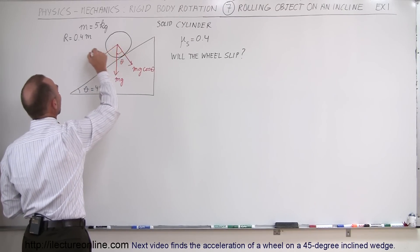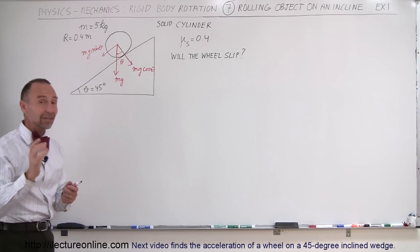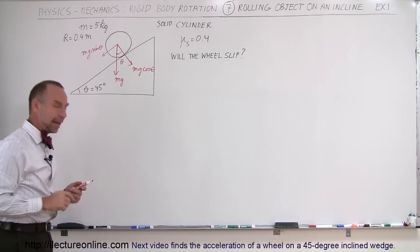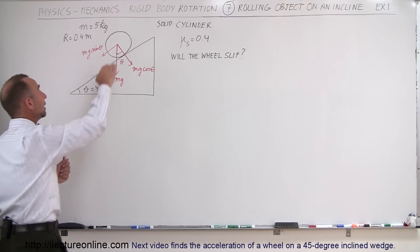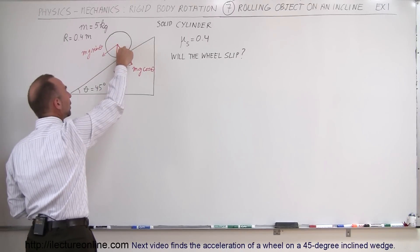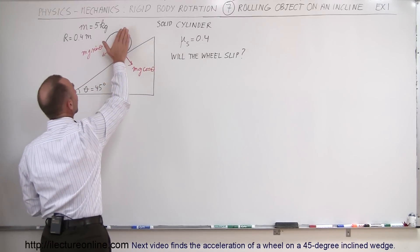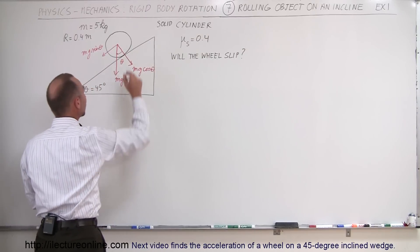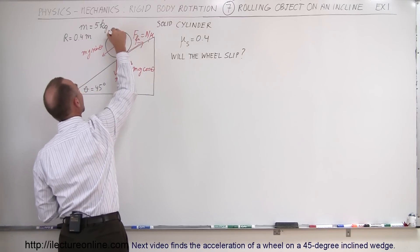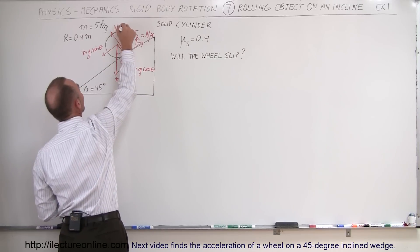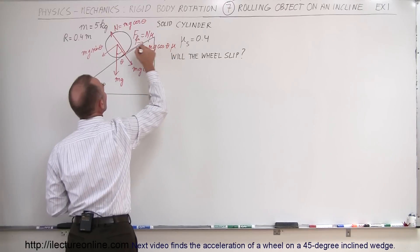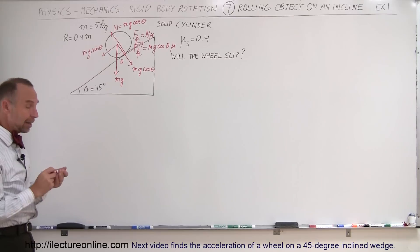The parallel component is mg sine theta — the force pulling the wheel down the incline. The perpendicular component, mg cosine theta, pushes the wheel against the incline, causing a friction force. Without friction the wheel would simply slide and not rotate. With friction — and here the coefficient of friction is 0.4 — the wheel rotates, meaning friction acts up the incline. The friction force equals the normal force times mu, and since the normal force equals mg cosine theta, friction equals mg cosine theta times mu.